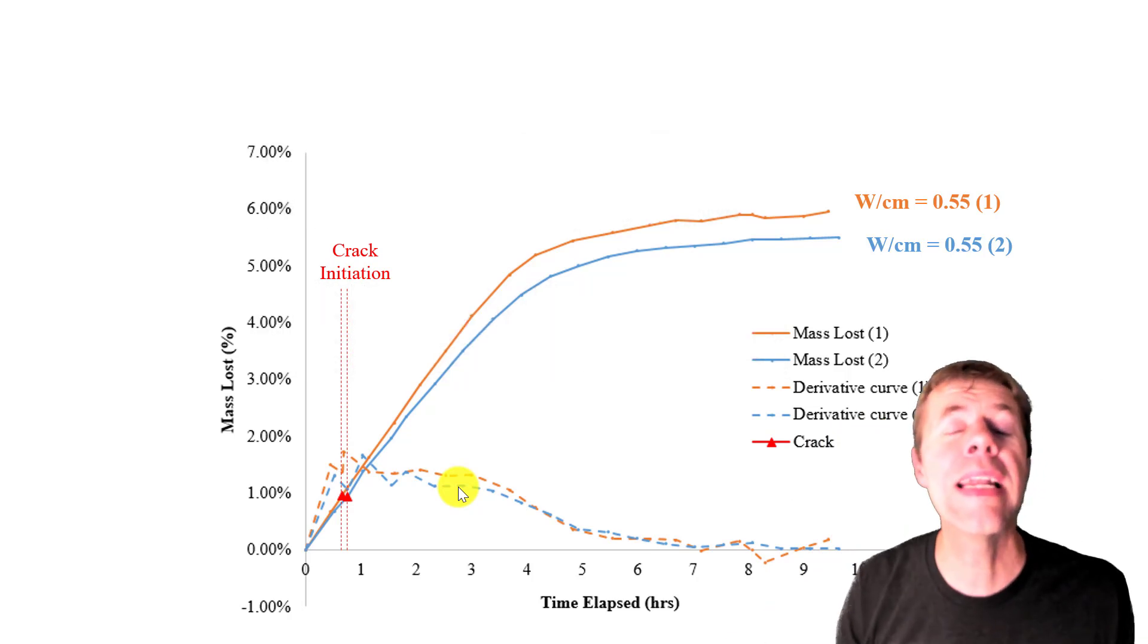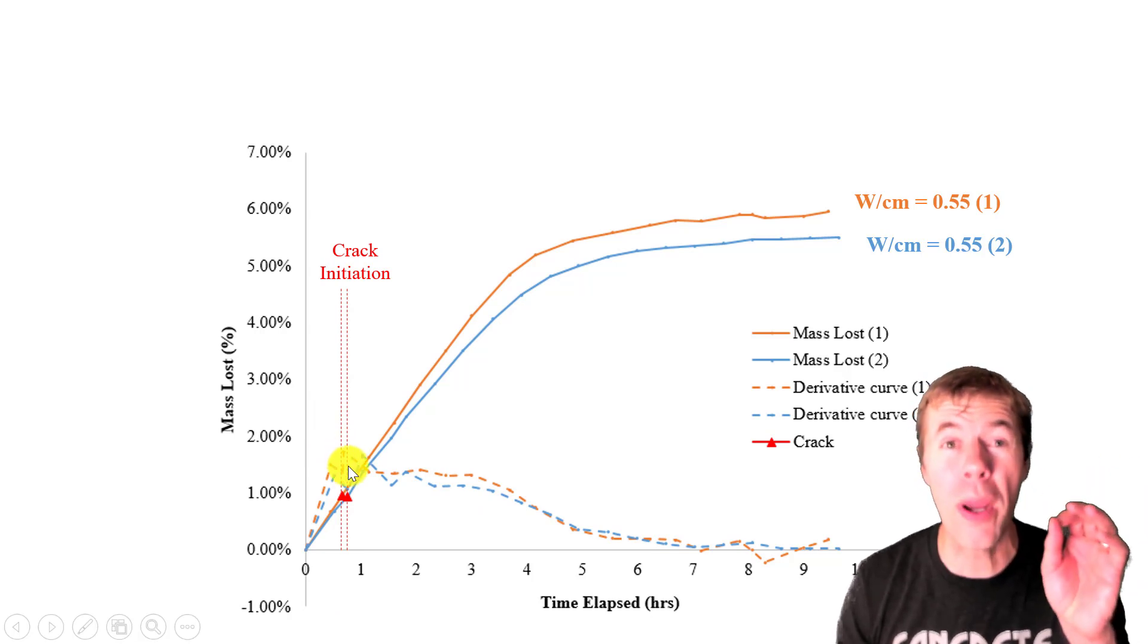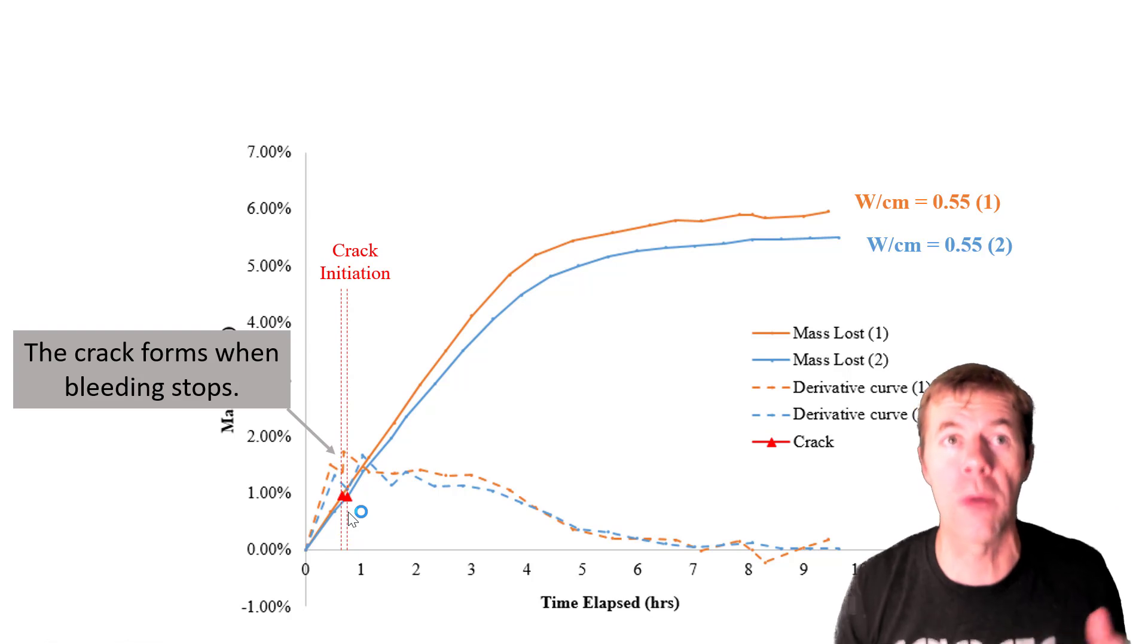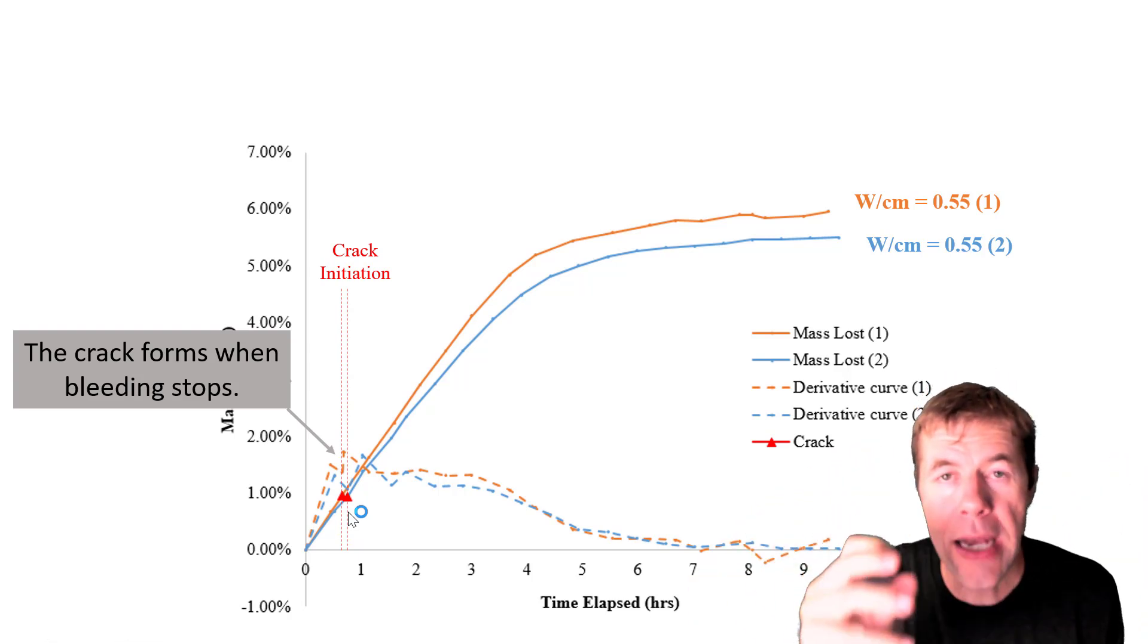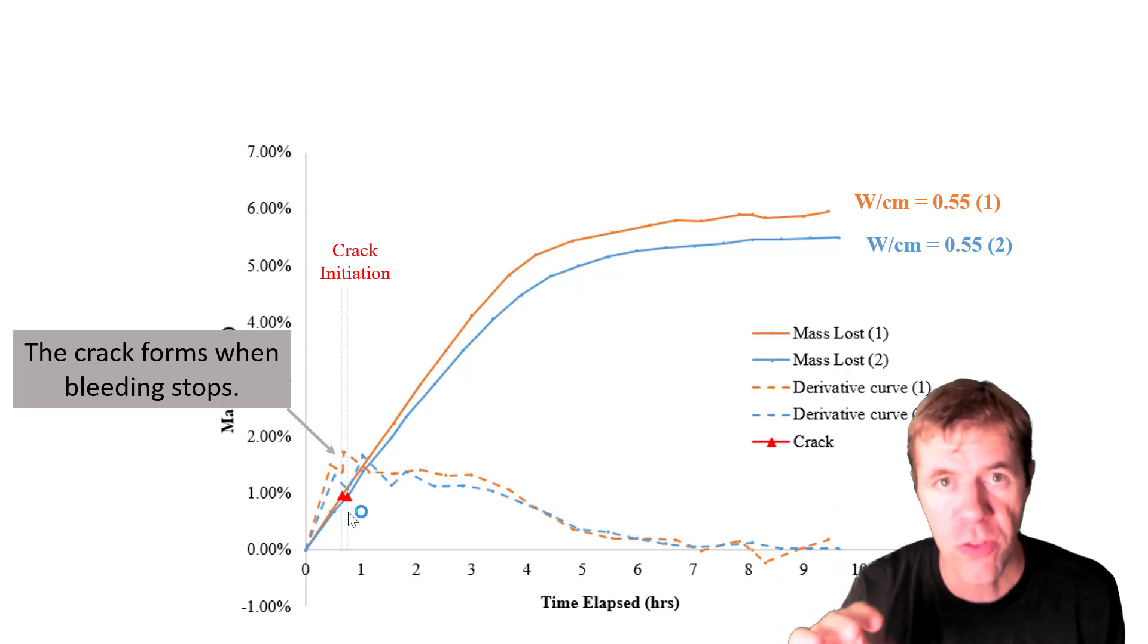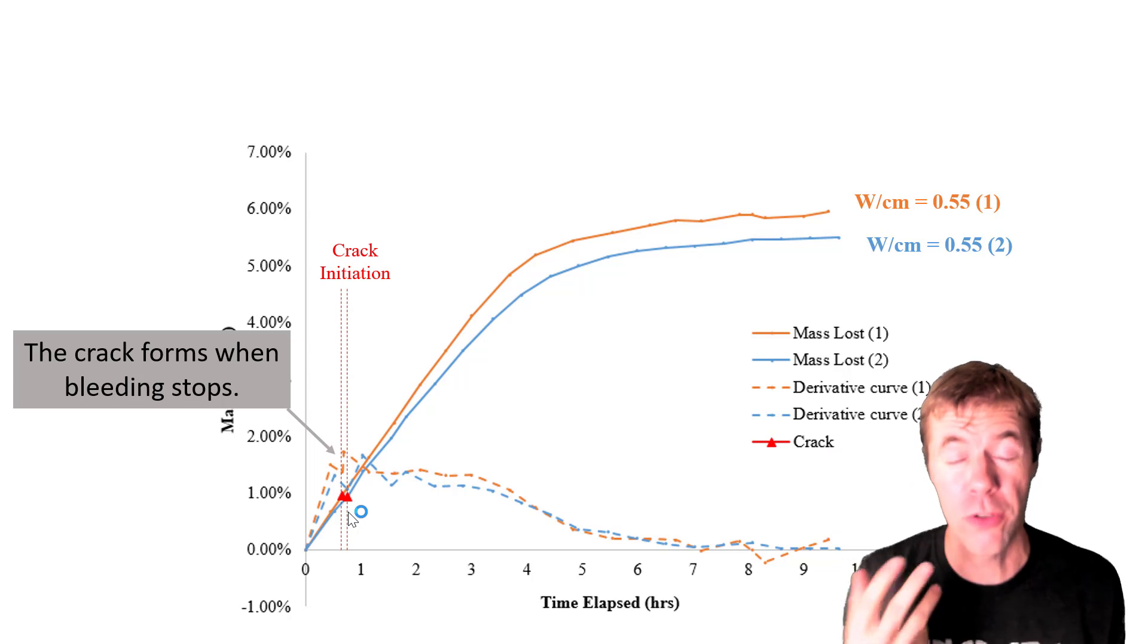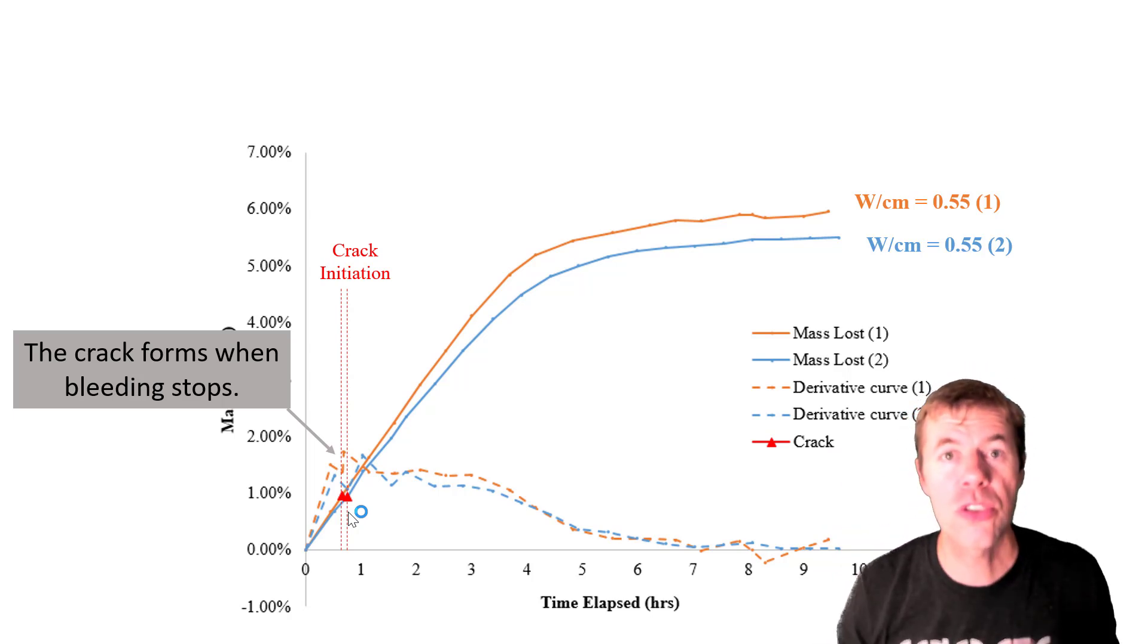And this dashed line is the derivative or the rate of change of the mass with respect to time. And what we see again and again is when the rate of change hits the maximum point, that is when, that's these red dots here, the cracks start to form. The cracks!